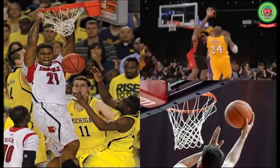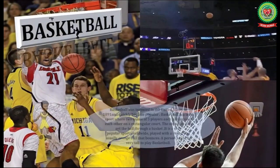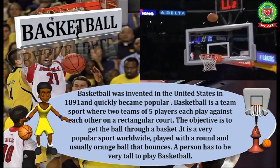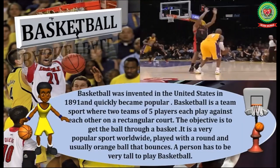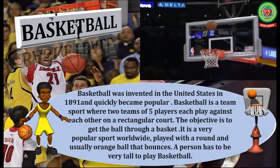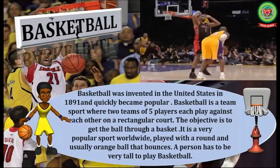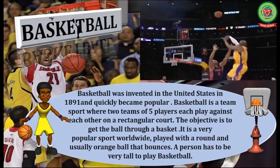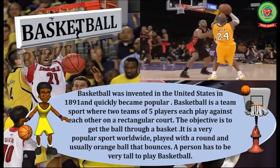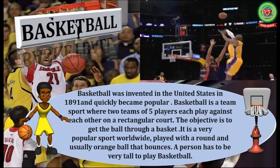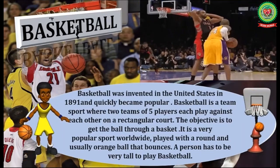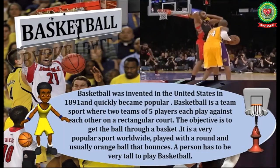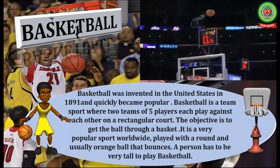Number four is basketball. Basketball was invented in the United States in 1891 and quickly became popular. Basketball is a team sport where two teams of five players each play against each other on a rectangular court. The objective is to get the ball through a basket. It is a very popular sport worldwide, played with a round and usually orange ball that bounces. A person has to be very tall to play basketball.